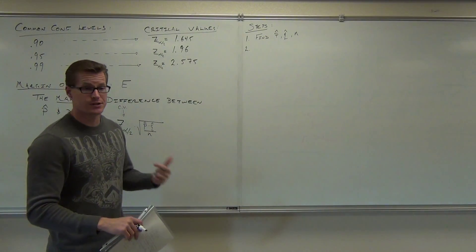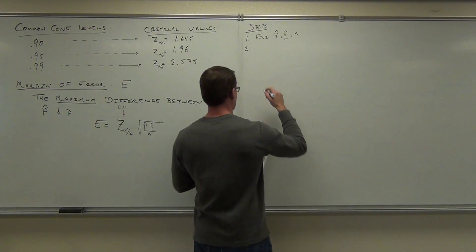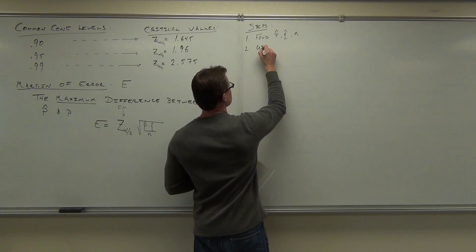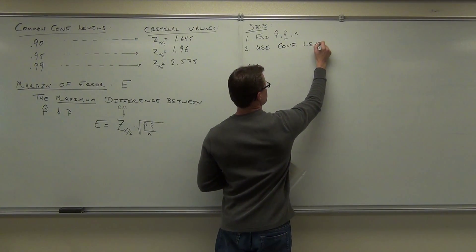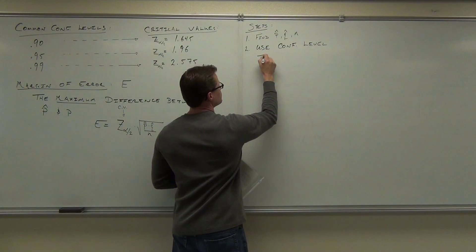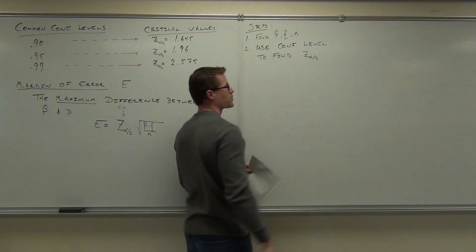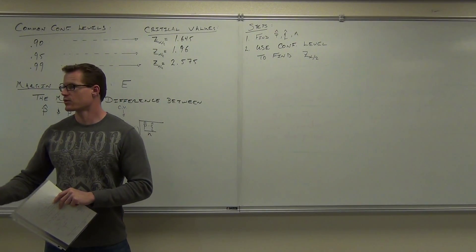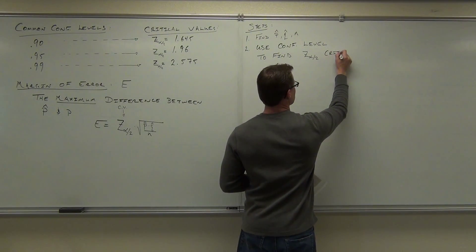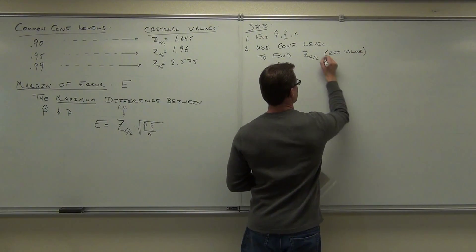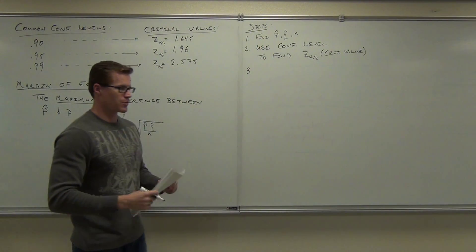So you're going to use your confidence level to find the appropriate critical value. Use the confidence level to find the appropriate z alpha over two, or in other words, that's a critical value. Okay, no problem. Number three.